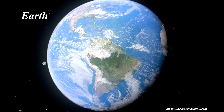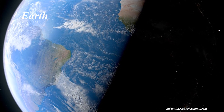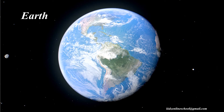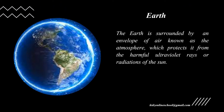Now we are going to see about Earth. Earth is the third planet from the Sun and is like a big ball covered with water and rocks. It is the only planet on which water can exist, and Earth's oceans keep the temperature stable. The surface of the Earth has various features such as oceans, rivers, mountains, and valleys. The Earth is surrounded by an envelope of air known as the atmosphere, which protects it from the harmful ultraviolet rays or radiations of the Sun.